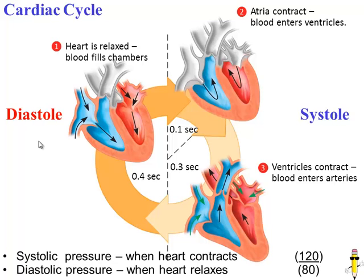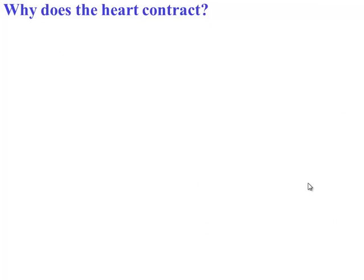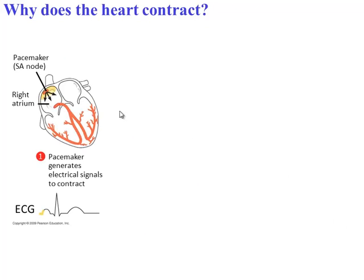That's where we get the two numbers in a blood pressure reading. The bigger number on top is the systolic pressure — that pressure is highest because that's when the heart is pushing blood against your arteries. The diastolic pressure is the smaller number on the bottom; it's smaller because that's when the heart is relaxing, so there's not as much pressure on your arteries. You might be wondering what makes the heart contract in the first place — up in the corner of the right atrium, there are special cells known as the pacemaker, which can generate their own electrical signals.